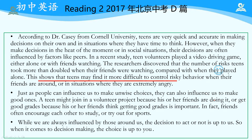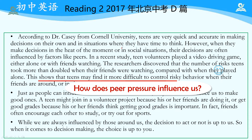This shows that teens may find it more difficult to control risky behavior. 这里是在说peer pressure对行为的影响，可能更难去控制这种冒险性的行为。接下来一段的topic sentence：Just as people can influence us to make unwise choices, they can also influence us to make good ones. 这里有一个转折，how does peer pressure influence us? 不只谈到negative ones，also discusses the positive beneficial effects.